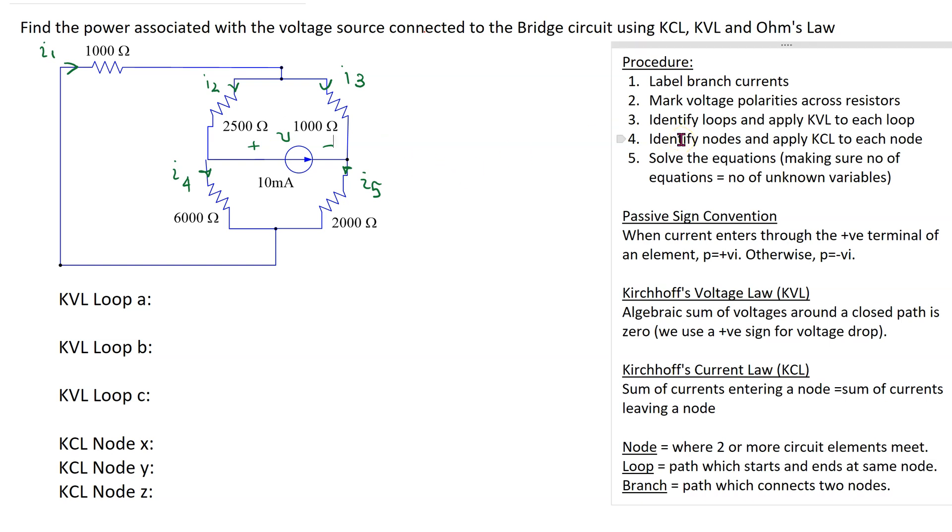The next step is to mark the voltage polarities across the resistors. So the end where the assumed current enters is higher potential and the end where the assumed current leaves is lower potential. Thus we have this voltage drop for this resistor and similarly we can mark the voltage polarities across the remaining resistors.